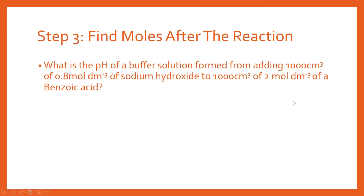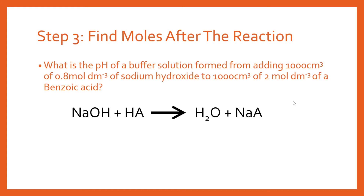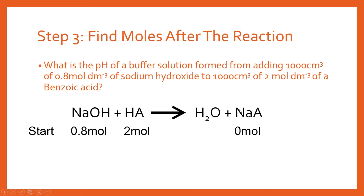Now let's find the moles after the reaction — a key step. The equation is: NaOH + HA → H₂O + NaA, where NaA is the sodium salt of the conjugate base. At the start of the reaction we have 0.8 moles of NaOH, 2 moles of benzoic acid (HA), and none of NaA yet since the reaction hasn't occurred. This is a balanced equation with a 1:1 ratio, and NaOH is the limiting reactant.